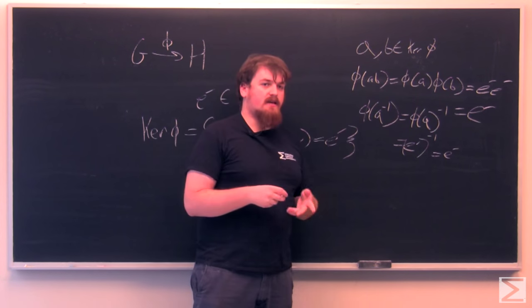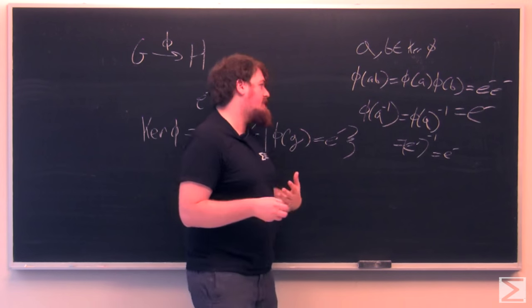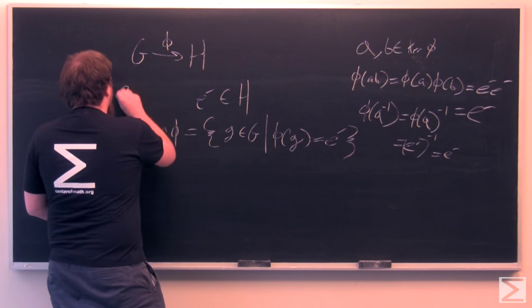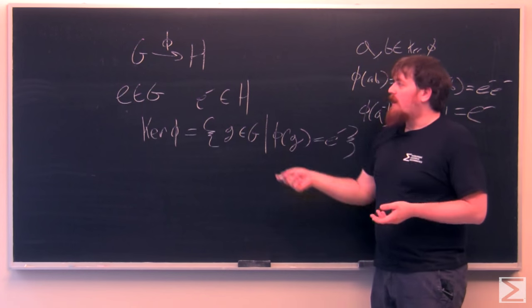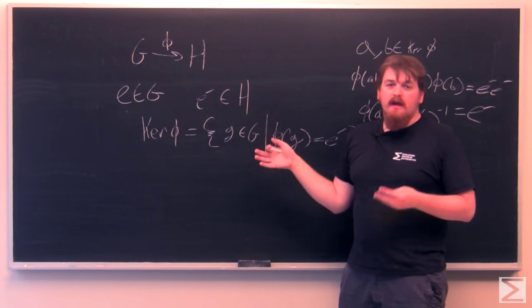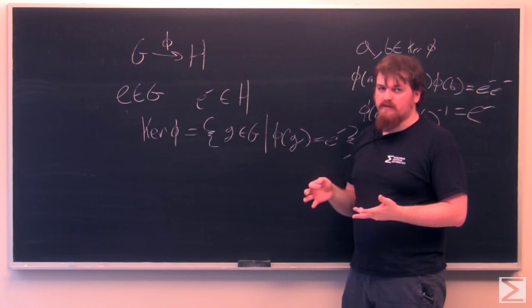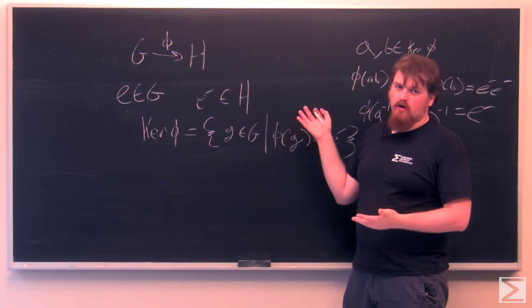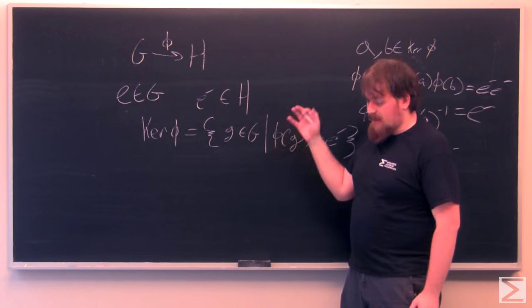One basic fact is that the kernel of an isomorphism is always just the set that contains only the identity E of G. Because if phi is an isomorphism, then it has to be injective, so it can only map one thing to one thing. And a homomorphism and therefore an isomorphism will always take the identity to the identity, so nothing else can go to the identity in H.